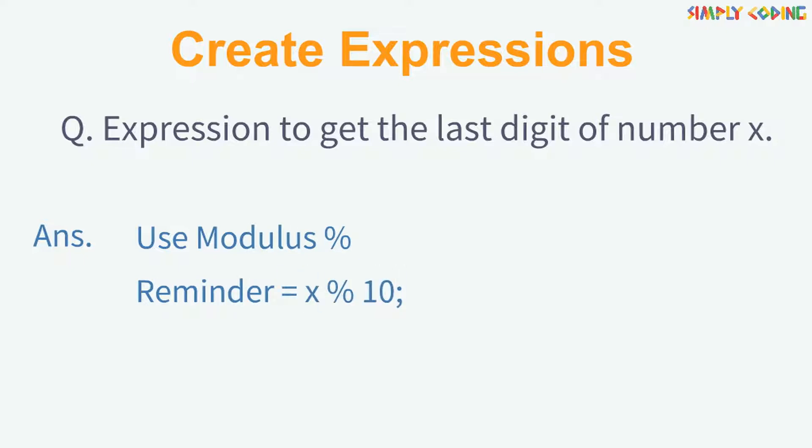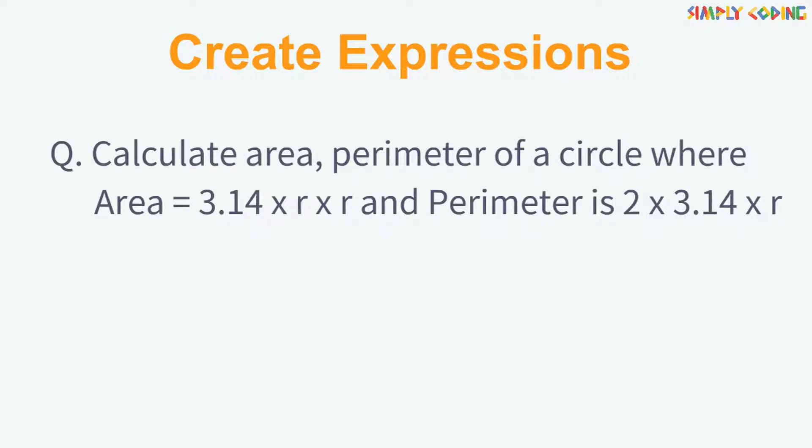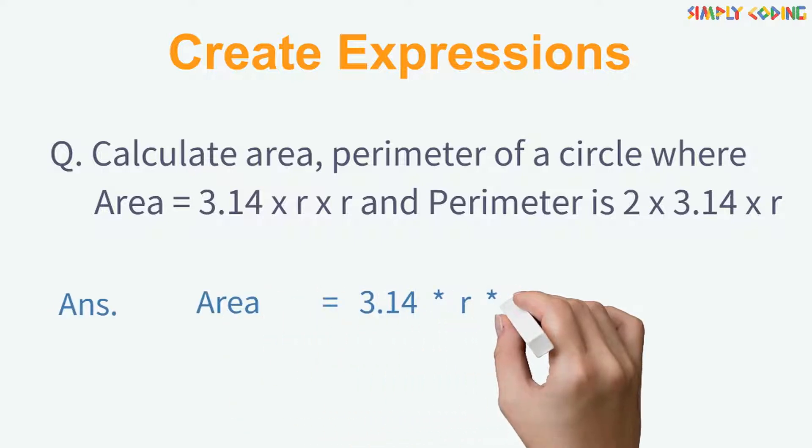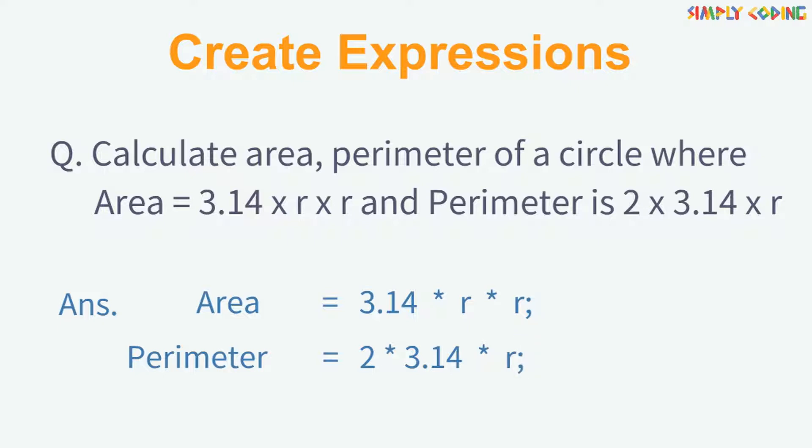Now, let's write an expression to calculate the area and perimeter of a circle. Here, we will calculate the area by multiplying value of pi which is 3.14 into radius two times. Similarly, we will calculate perimeter by multiplying 2 into pi into radius r.